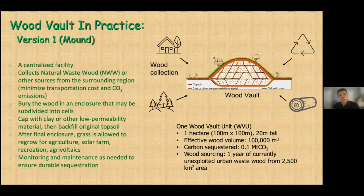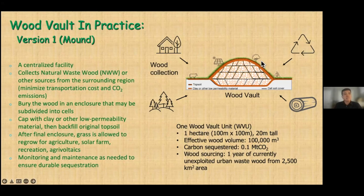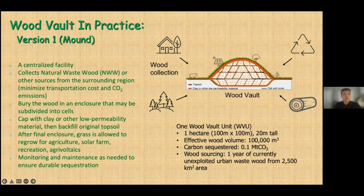In practice, the wood vault will look like what we're already working on — what we call a mound. It's half underground, half above ground. It's a centralized facility that collects natural waste wood from the surrounding region to minimize transportation costs and operational CO2 emissions. The wood is buried in an enclosure that may be subdivided into cells, capped with clay or other highly impermeable material to maintain anaerobic condition. Finally, at the end of the operation, the topsoil is backfilled, allowing grass to grow back. You can then have agriculture, a solar farm, agrovoltaics, or recreation.